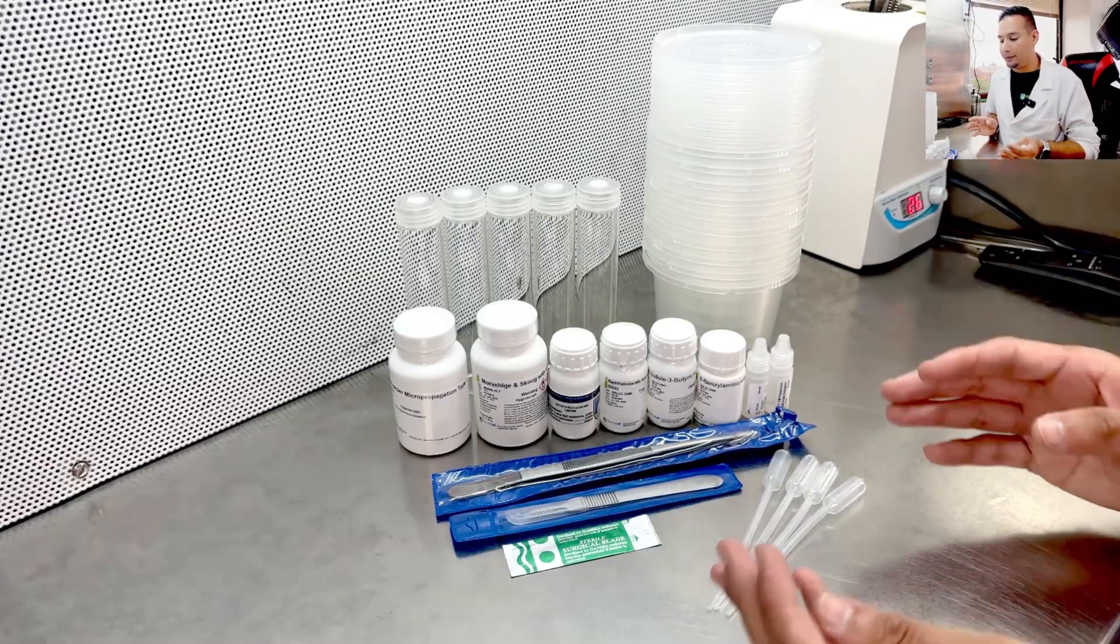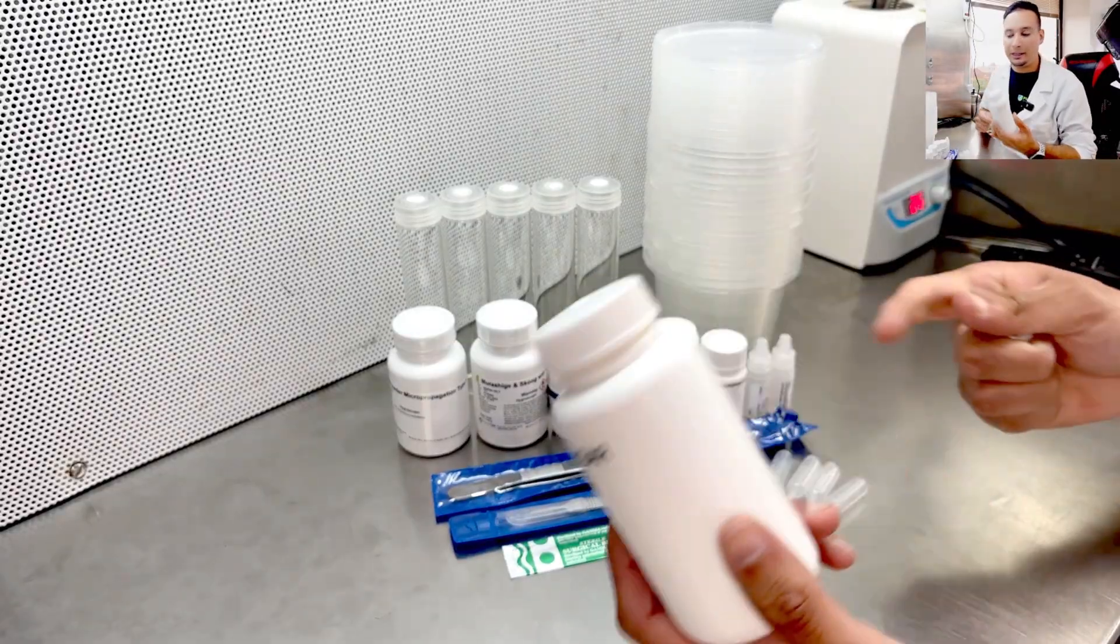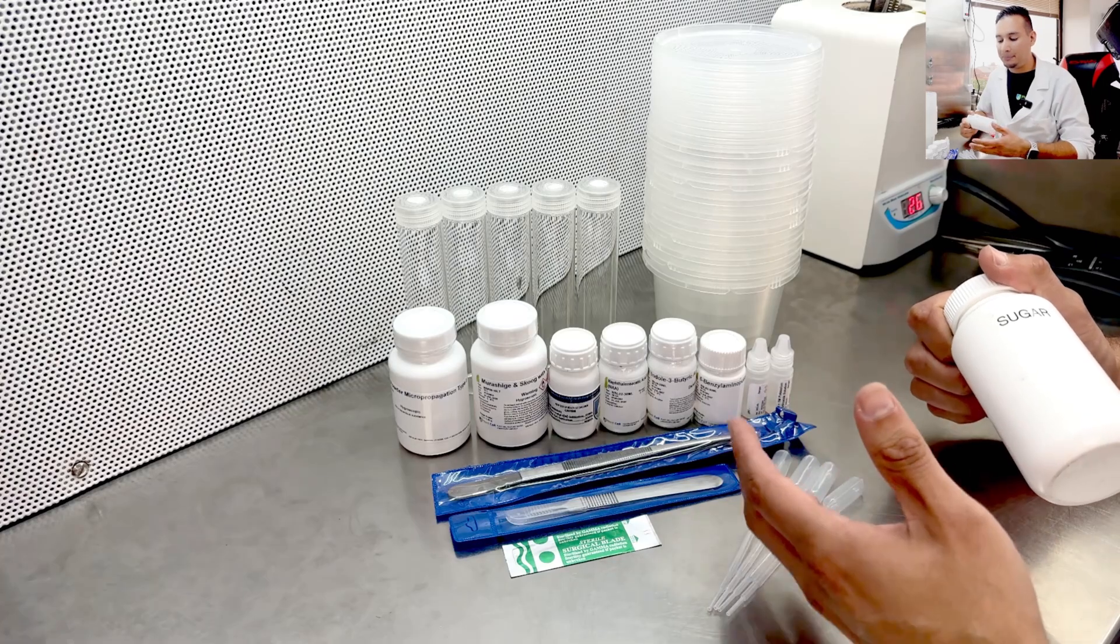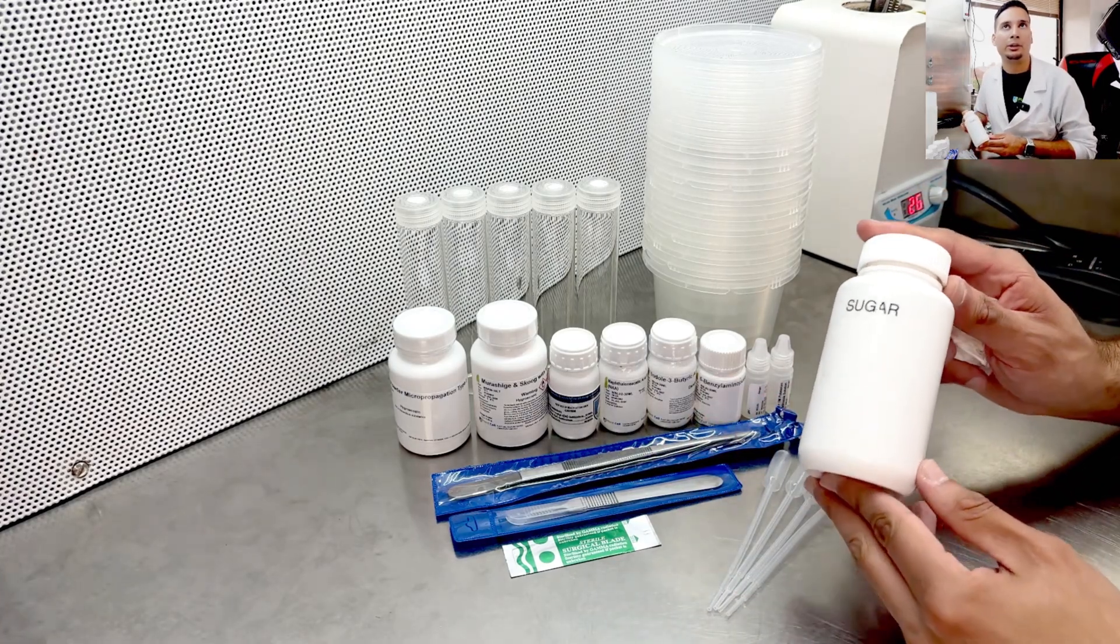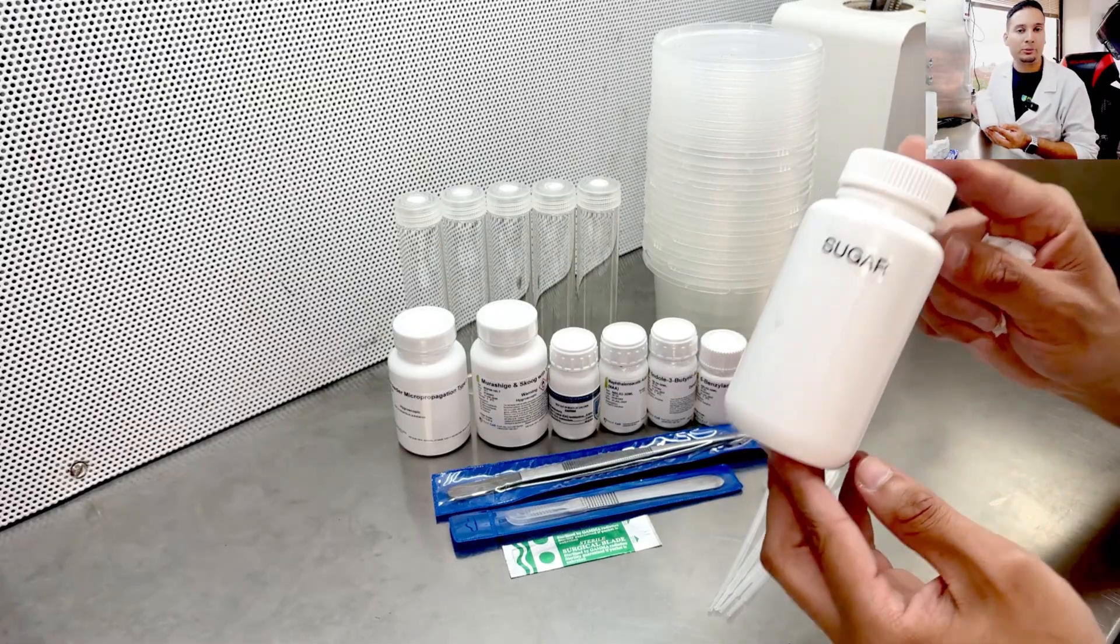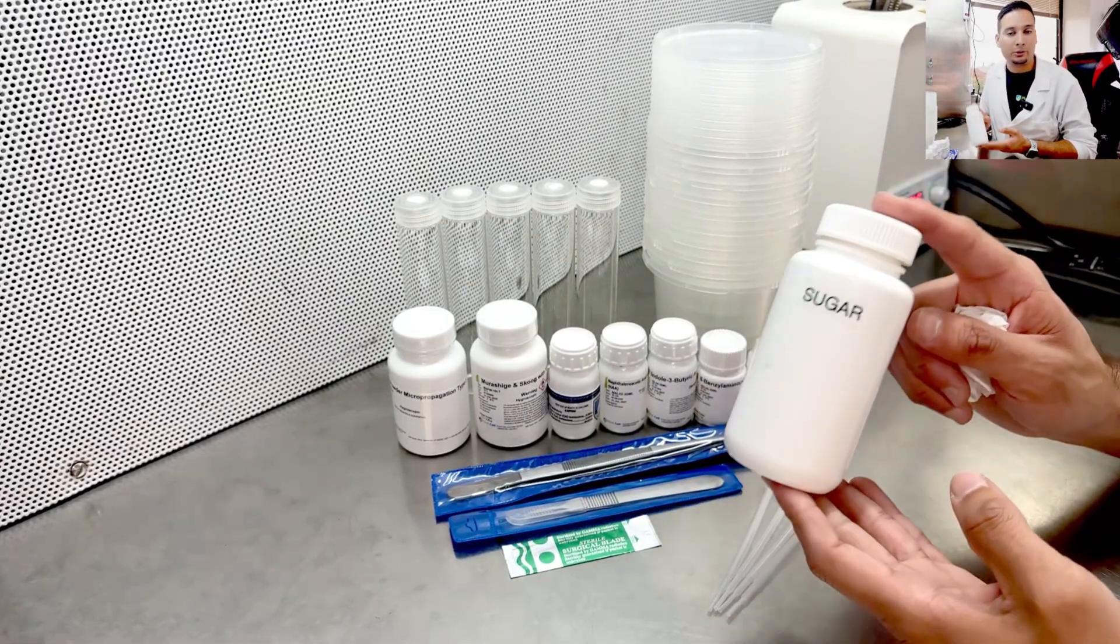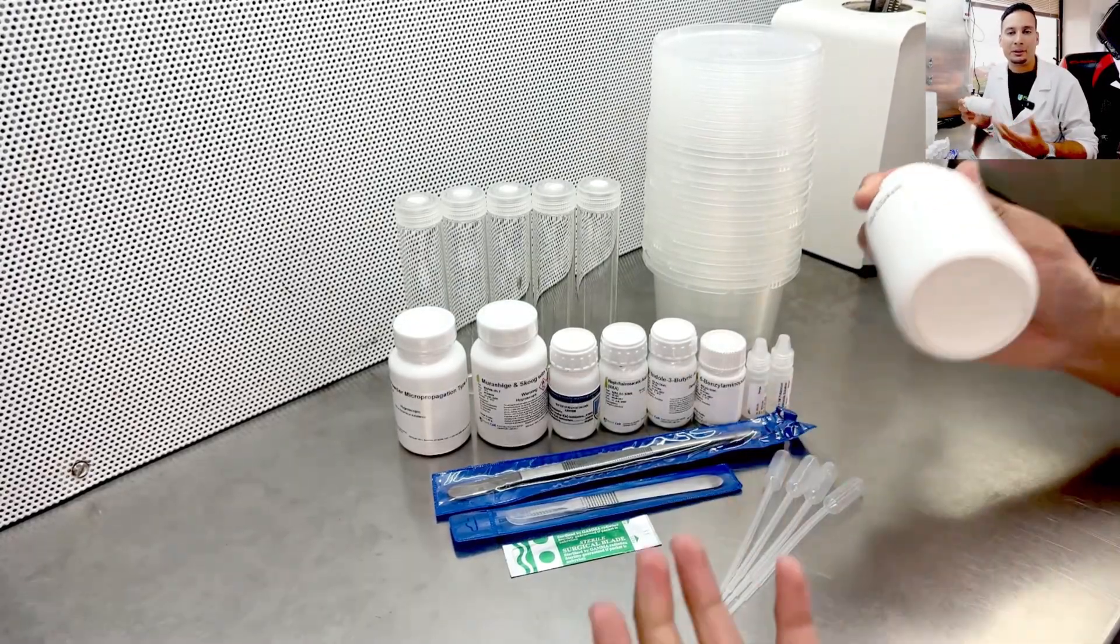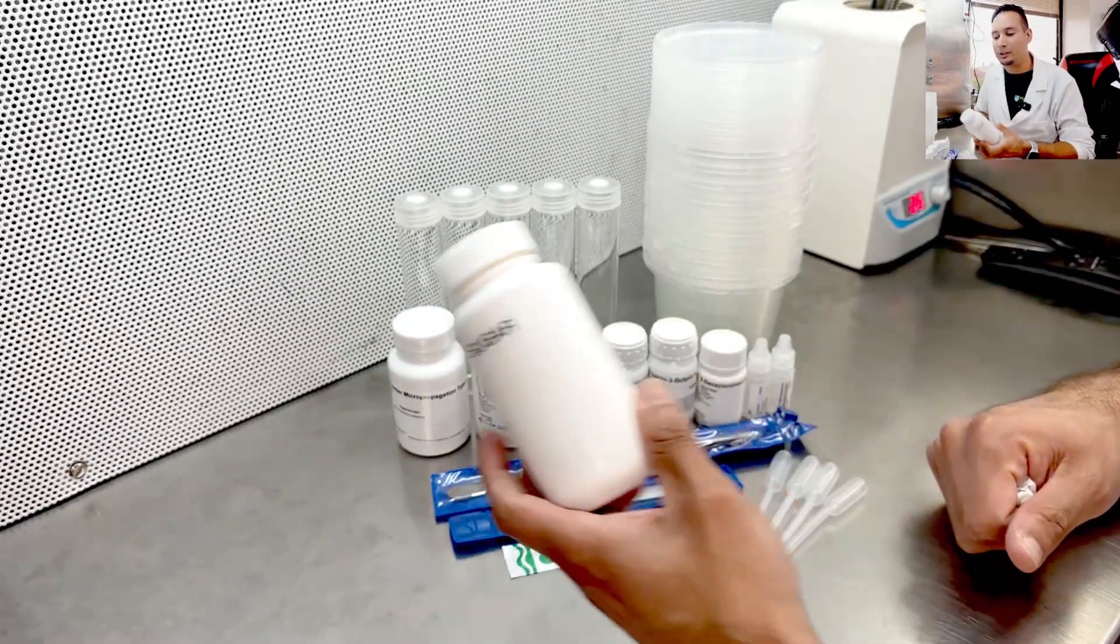So the first thing that you will need is sugar. The kit has everything that you need - the nutrients, the agar, the PPM, and the hormones. However, this media does not have sugar. I would recommend you get your own sugar, this is just regular sugar from the grocery store. There's nothing fancy about it, that's why we are not including this, because it is more expensive to ship your sugar than you can get this from your own store.